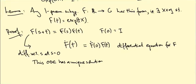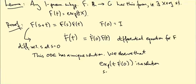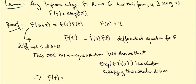And it turns out that the solution is given by the exponential map. So it has a unique solution. We observe that exp(T F'(0)) is a solution that satisfies this initial condition. Therefore, it is the unique solution. So this tells us F(T) has to be equal to this particular solution. So let's check, why is this a solution?